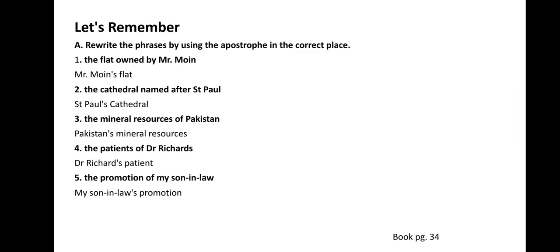So the first sentence is: the flat owned by Mr. Moin. What will happen here? Mr. Moin's flat. The apostrophe will be placed with Mr. Moin. The second sentence: the cathedral named after St. Paul — St. Paul's cathedral.